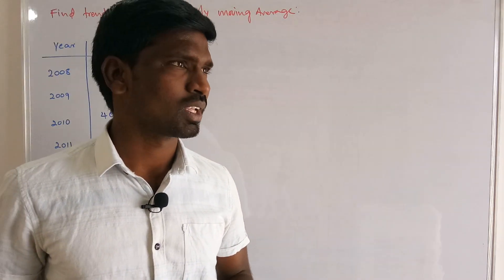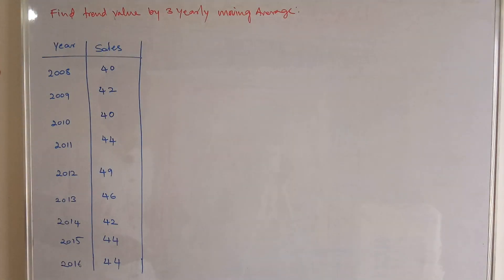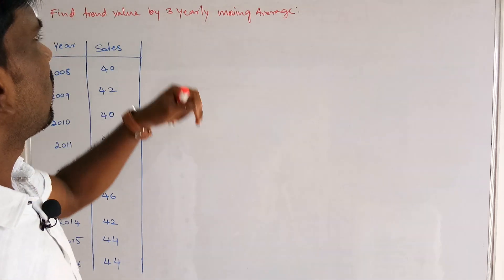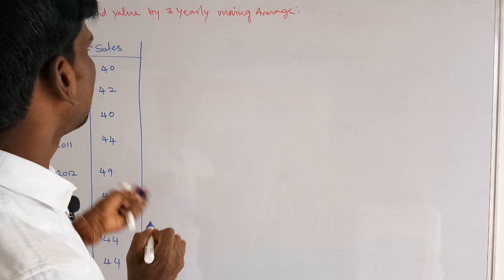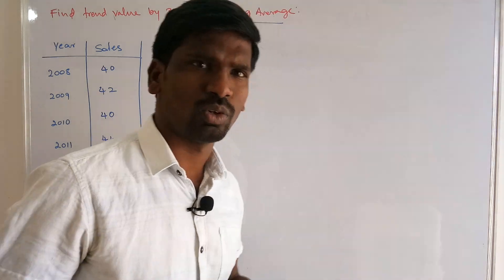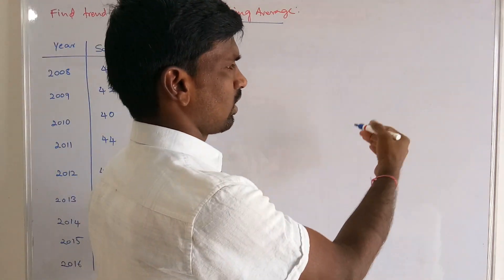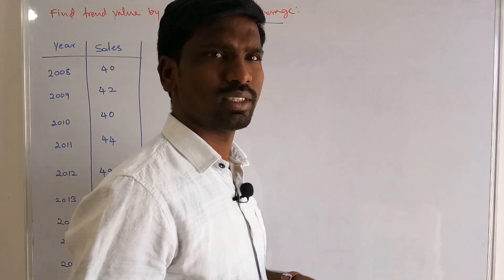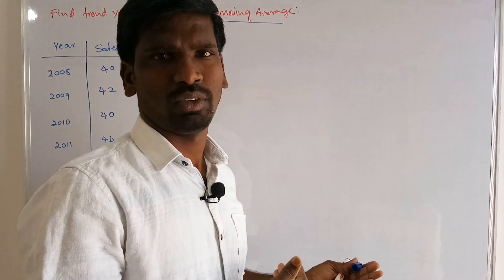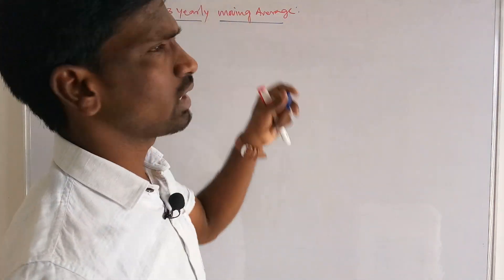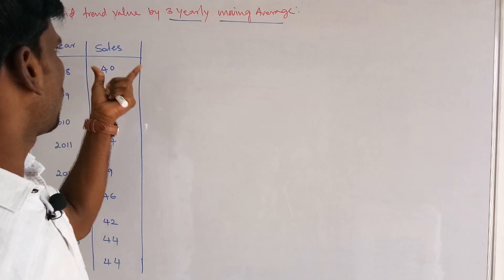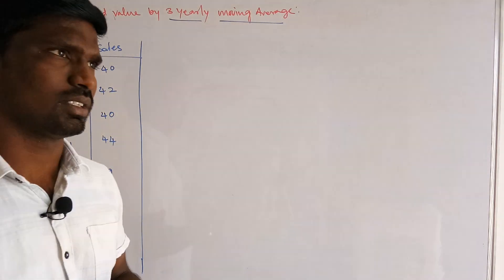Hi students, today we are going to discuss one of the top methods in time series: finding the trend value by three-yearly moving averages. We already know there are four different methods in time series — the graphic method, the semi-average method which we discussed previously, and today we are going to discuss moving averages. Moving average calculates the average of values for particular years using a moving method.